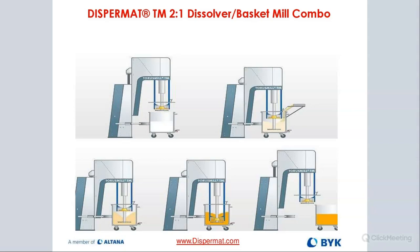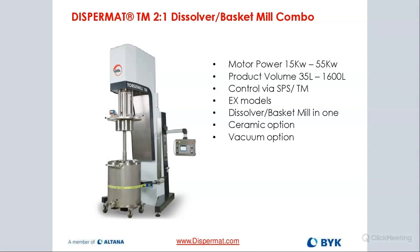First you start dispersing with the cowl's blade. When you are fully dispersed, you push a button on the control panel and the basket lowers — the cowl's blade is still in there acting as a pumping wheel to push the product back to the top — and then you're milling. You never move the container away from the machine. You put it there, disperse, add your raw materials, push a button, the basket mill comes down, and now you're milling. When done milling, you just move the container — everything done on one machine, no change needed, no moving baskets around.